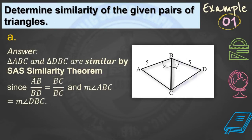Let us determine the similarity of the given pairs of triangles. The two given triangles are similar by SAS similarity theorem, since segment AB corresponds to segment BD, segment BC corresponds to segment BC, and the measure of angle ABC equals the measure of angle DBC.